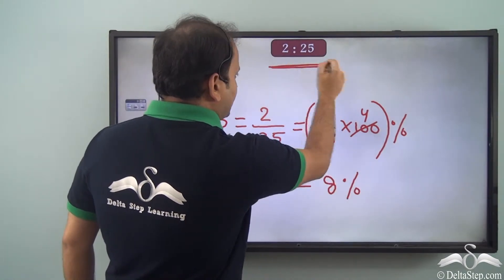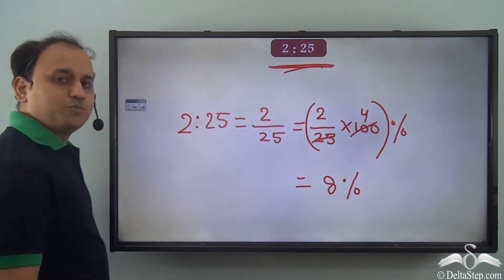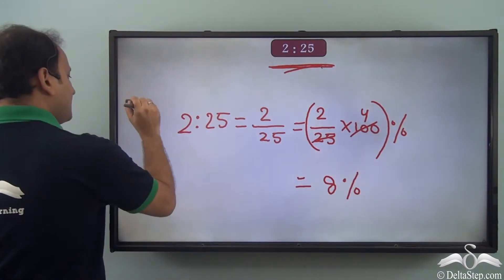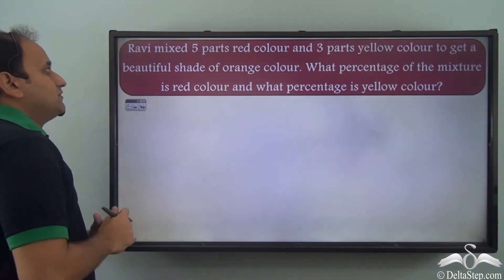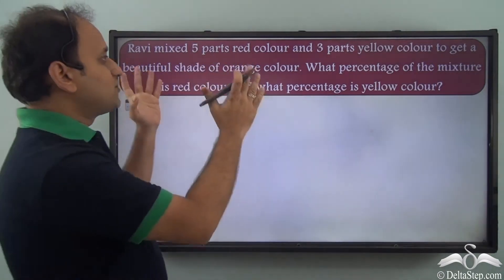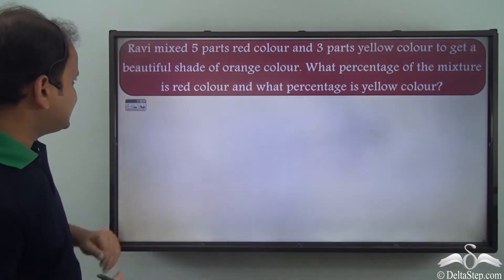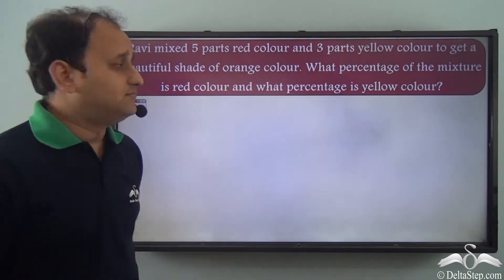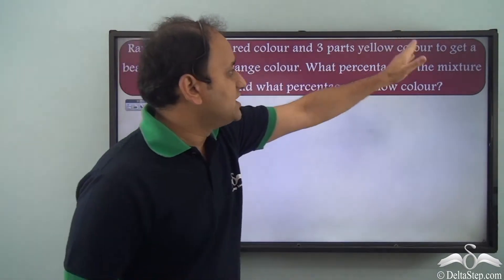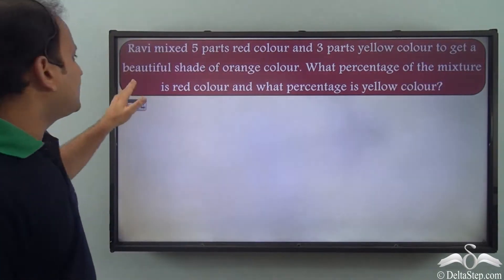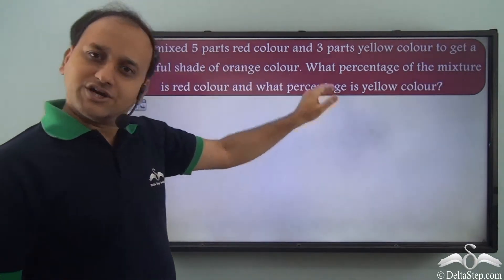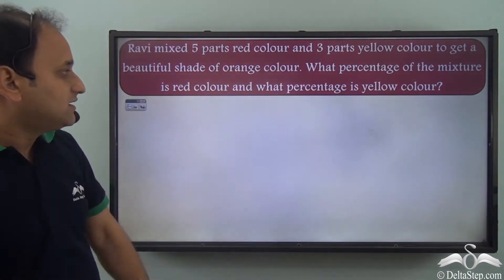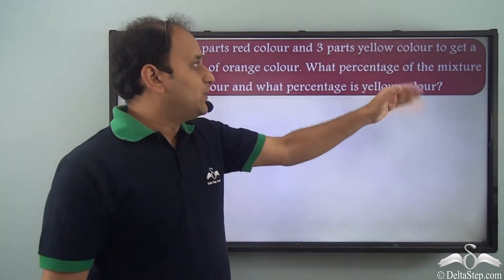Whenever you have a ratio and you want to convert it into percentage, this is how we solve it. Now we have another question here. Ravi mixed 5 parts red color and 3 parts yellow color to get a beautiful shade of orange color. What percentage of the mixture is red color and what percentage is yellow color?